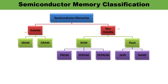Volatile memory is of two types: SRAM and DRAM. RAM stands for random access memory — it is a volatile memory, meaning data is available when power is on but lost when power is off, making it suitable for short-term storage. SRAM, or static random access memory, has an array of flip-flops used to store data. One flip-flop stores one bit of information, and the memory cells hold data as long as the power supply is on.